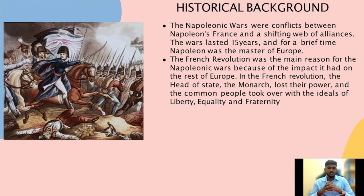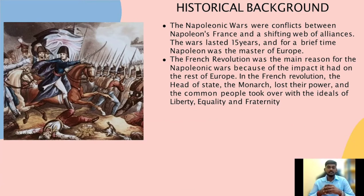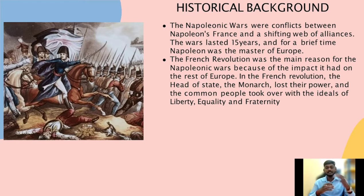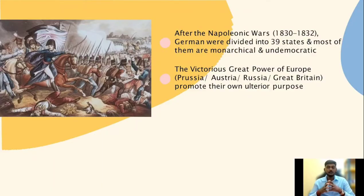In the French Revolution, the head of state — the monarch — lost their power and the common people took over with the ideals of liberty, equality, and fraternity. The peace treaty after the Napoleonic Wars left Germany divided into 39 separate states.